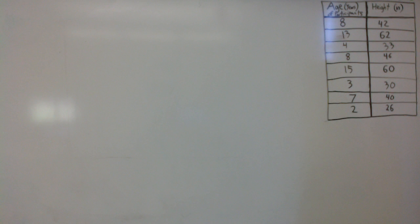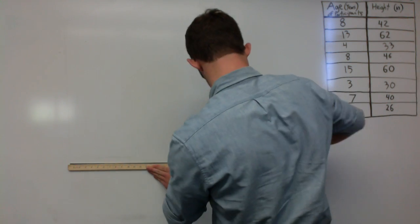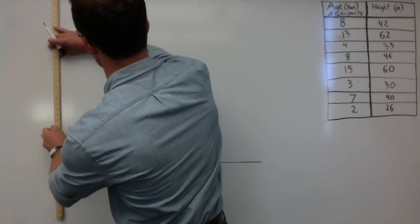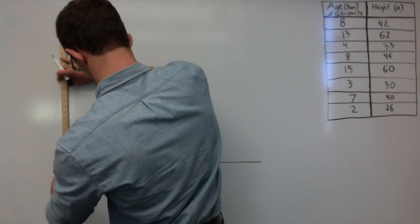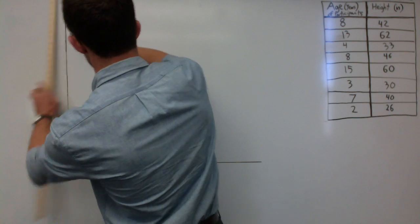Let's pretend you're a pediatrician who's collected data on children's growth and you want to graph it. First thing you need to do is draw your axes. Draw them straight and at a right angle. If you don't have a ruler, use the edge of your piece of paper.